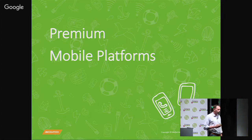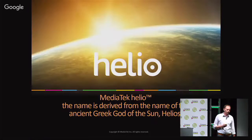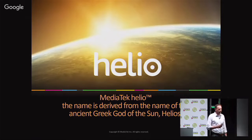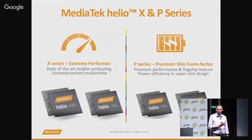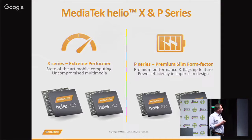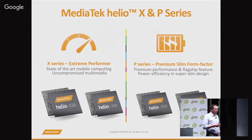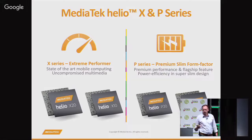Focusing on our mobile platform, our premium brand is called Helio — from Helios, the god of the sun in Greek mythology. Helio has two series: the X-Series for extreme performance and the P-Series for mainstream, power-efficient devices. The latest announced at Mobile World Congress this year was the P20, while the X20 has been shipping since April and can be found in phones like Leeco, Meizu, and Xiaomi — mostly in Asia. This technology is less than six months old in commercial products.